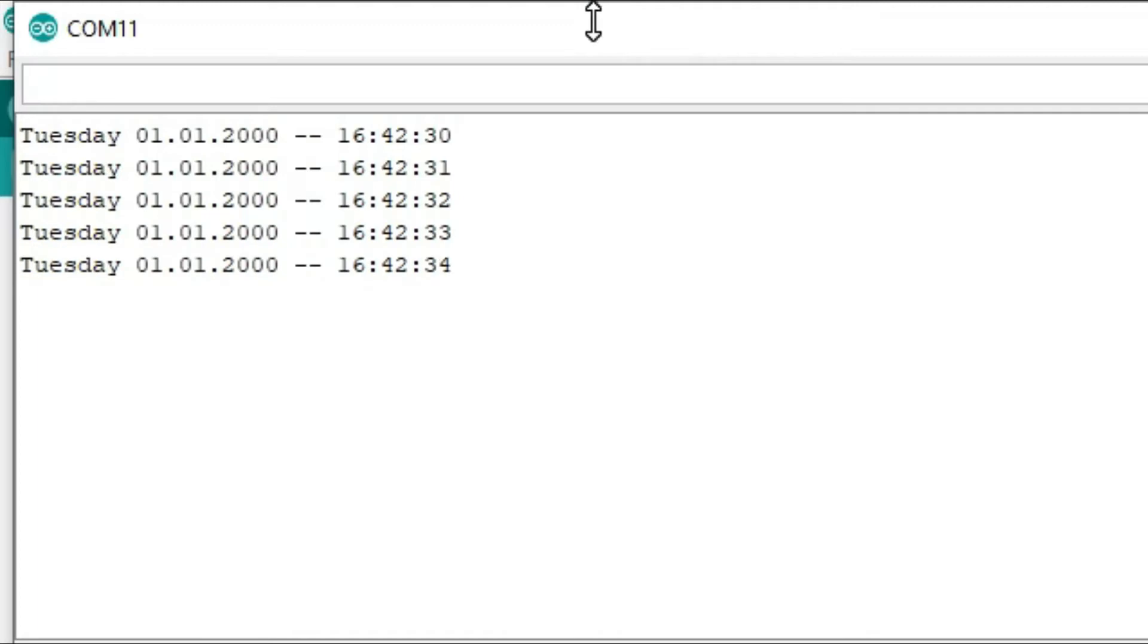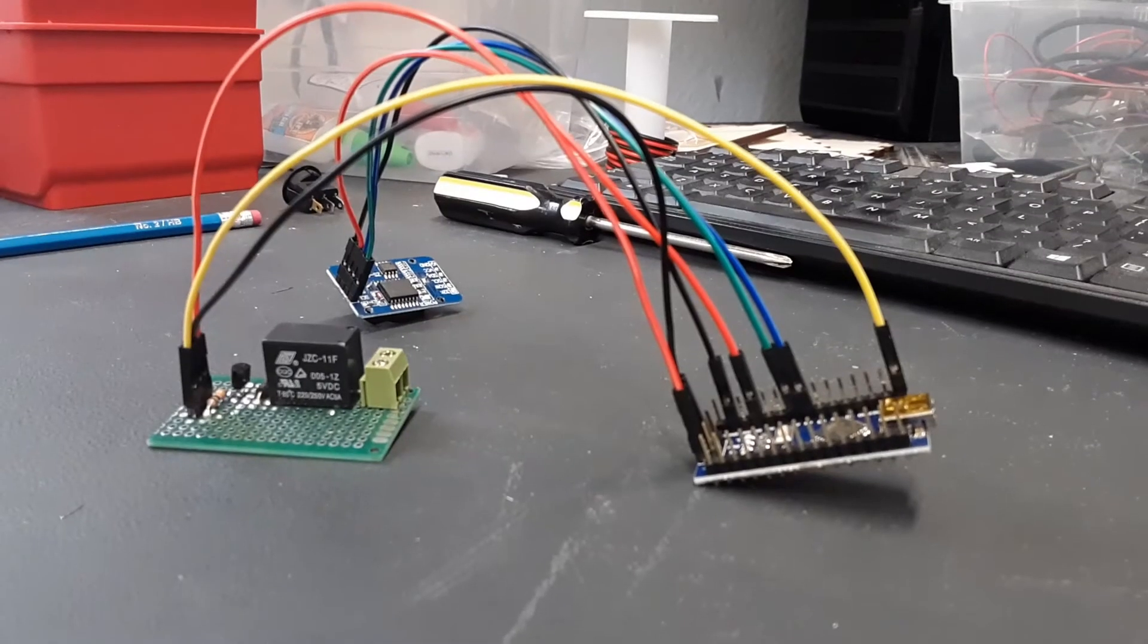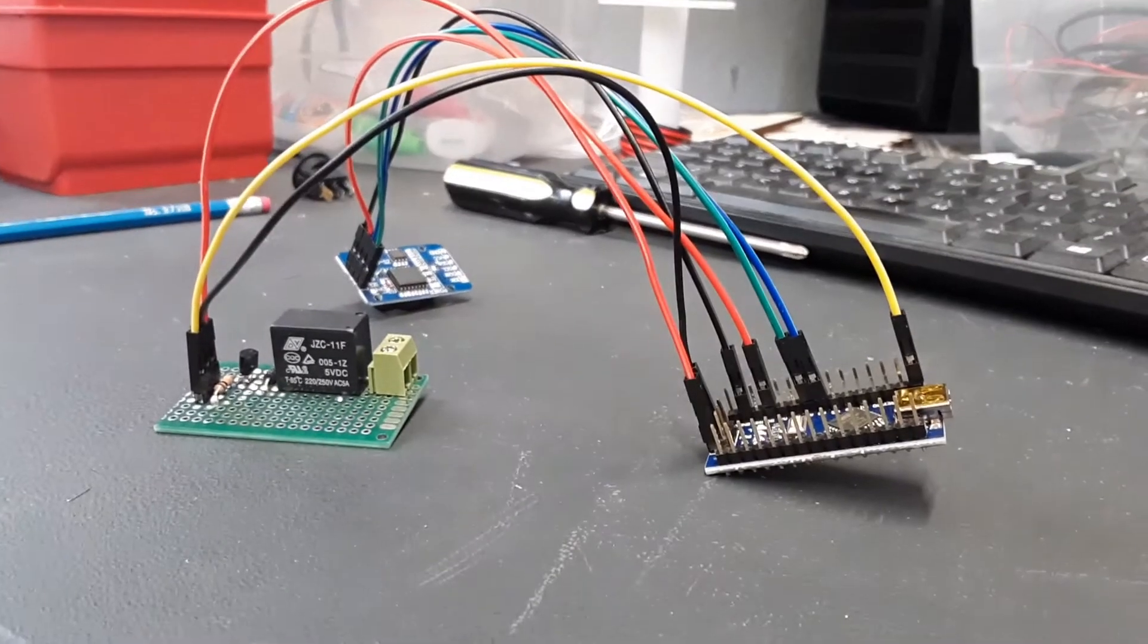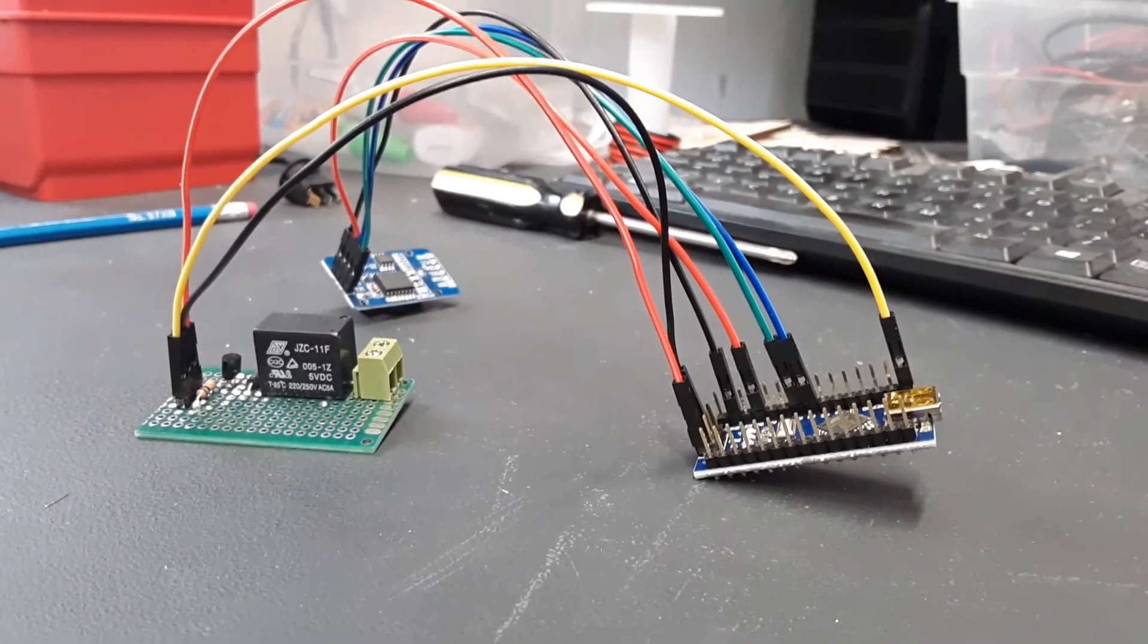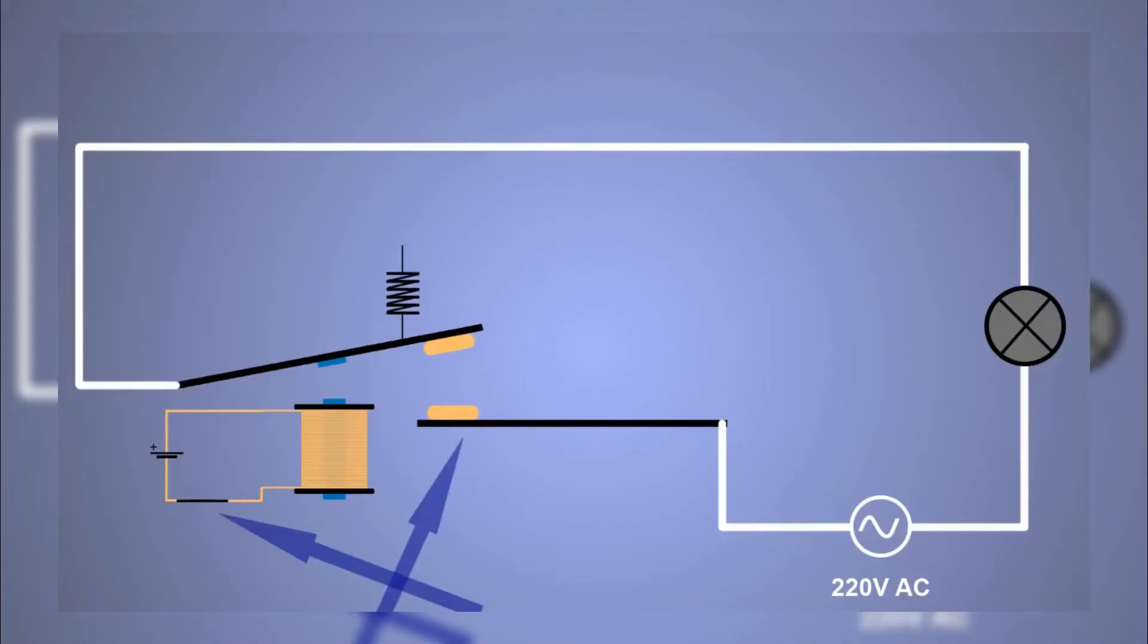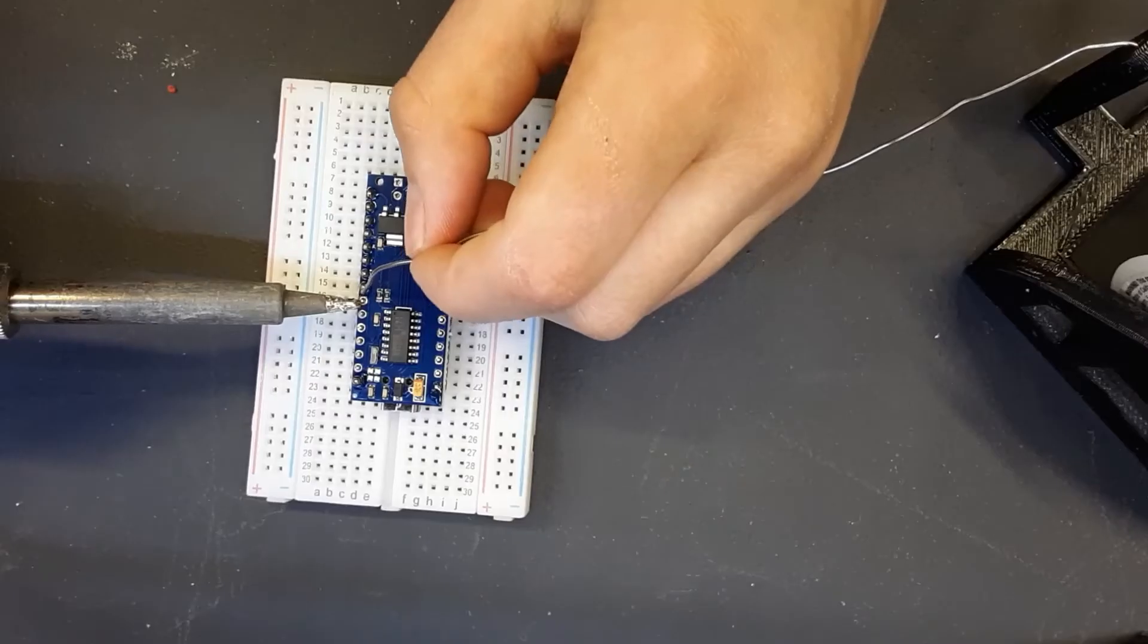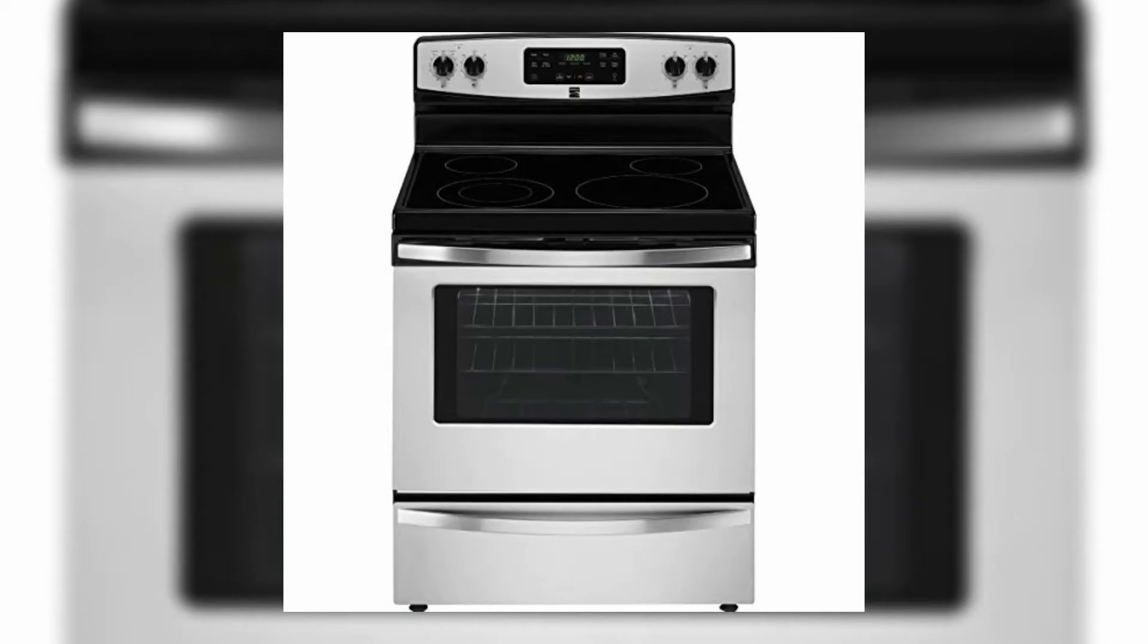Now that I have confirmed that the RTC is working correctly, I hooked up a small relay to the Arduino. A relay is a switch that triggers when you give it a small amount of electricity. This allows computers like the Arduino to control high-powered devices with ease.